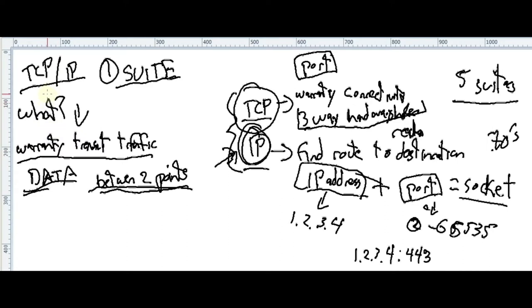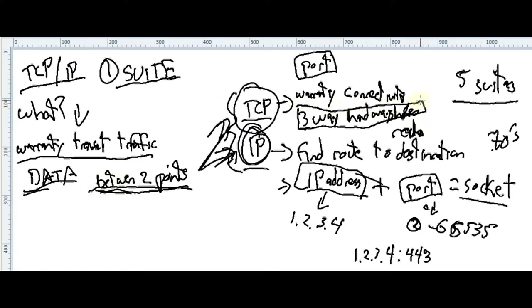Recap: What is TCP/IP? It's a suite with the goal of guaranteeing the transmission of traffic between two endpoints. How do we accomplish this? We use TCP and IP, the two parts of the suite. The IP part helps us find the route to the destination using an IP address. The TCP part guarantees connectivity between the two endpoints using a three-way handshake. If you don't know what a three-way handshake is, you're in the right place — you'll learn it in part number two.